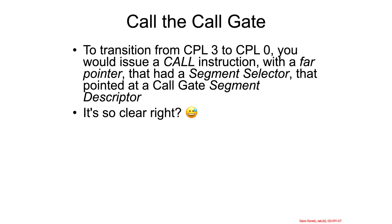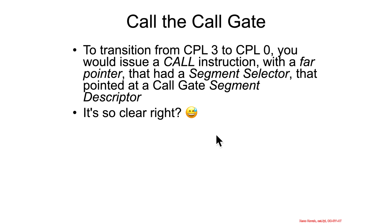So how does one call a call gate? You issue a call instruction with a far pointer that has a segment selector that points at a call gate segment descriptor. It's all so clear — it's not as if I've just thrown out a ton of jargon at you.